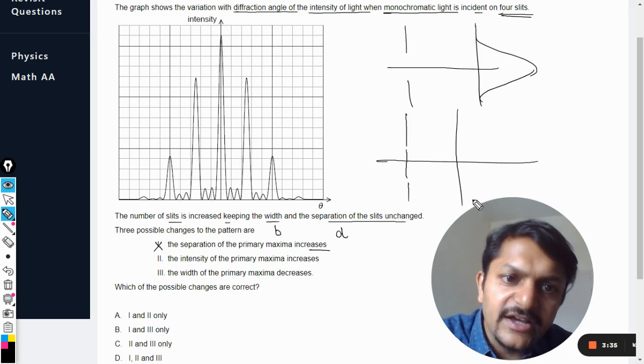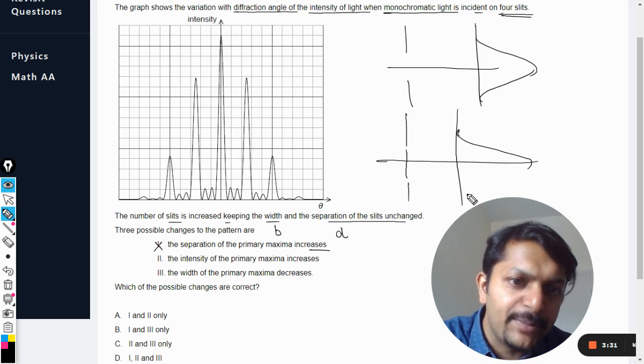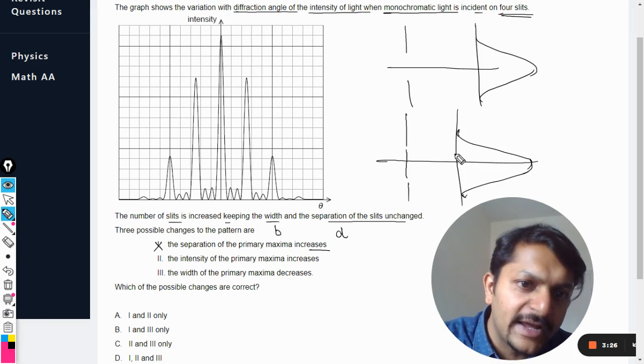The interference is there but it is modulated with diffraction, so diffraction is still happening like this but the pattern, the actual pattern will look like this.